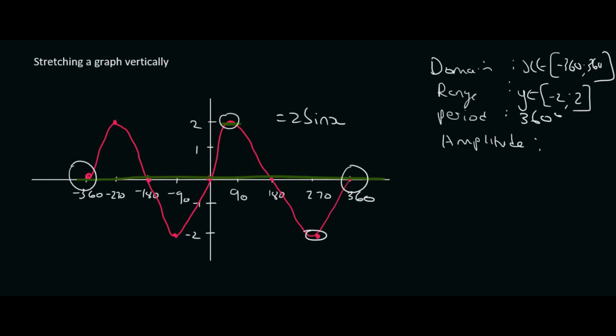The period of a sin graph for grade 10 is always 360, no matter what the number in the front or if we maybe add a number at the end. The amplitude is always this number in the front. But you could also measure from the resting position, and we can clearly see that that length is 2.